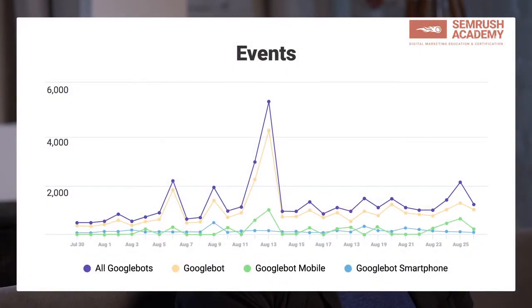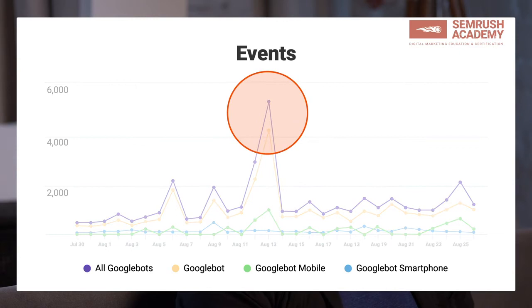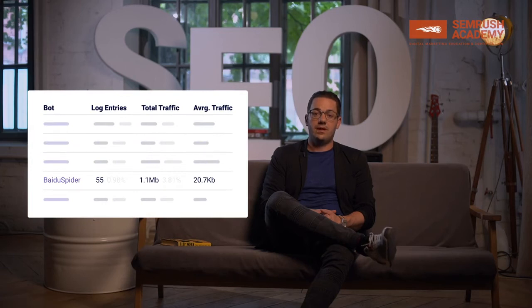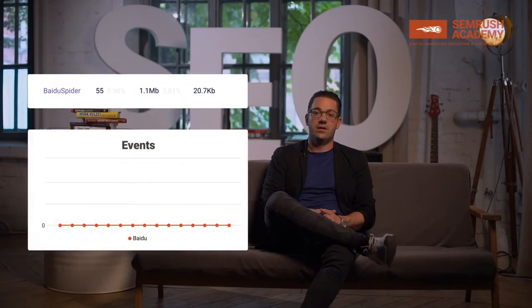One of the most obvious things you can do based on log file data is try to spot anomalies within a certain timeframe. You would need log file data that goes back a couple of days, or even better, a couple of months. You can see spikes in crawl behavior — for example, Googlebot was crawling very aggressively for one or two specific days. Or if you want to be found in China but it doesn't seem to be happening, and you then see in the log files that Baidu doesn't crawl your site at all, that would indicate that you have a problem.